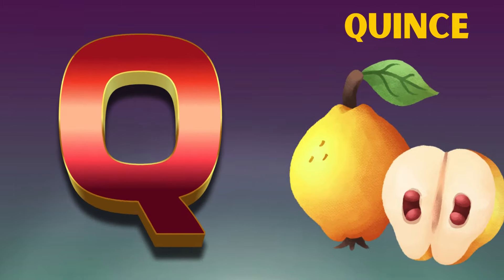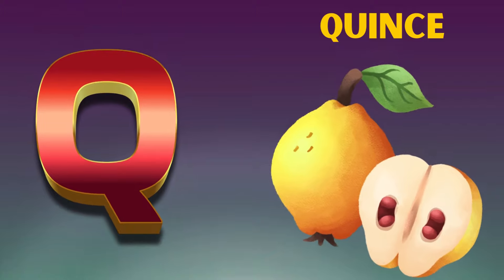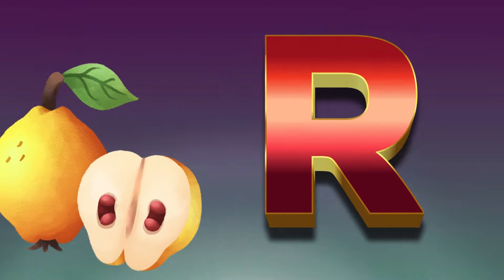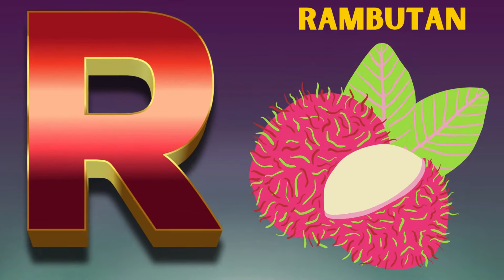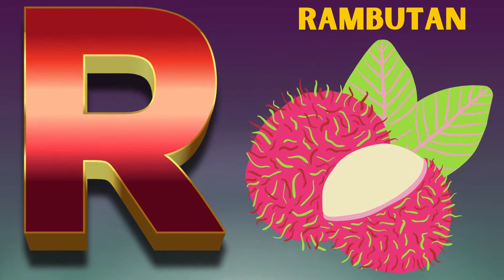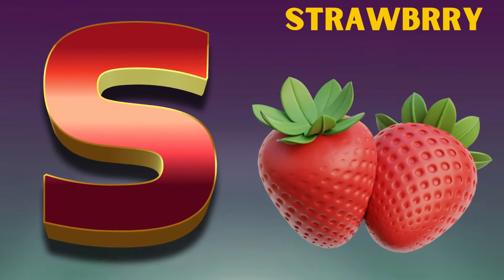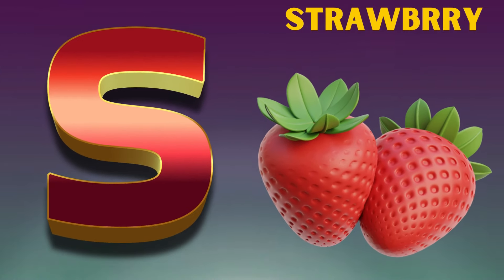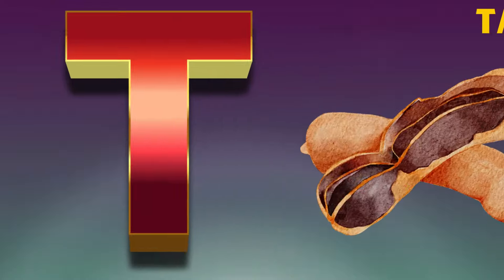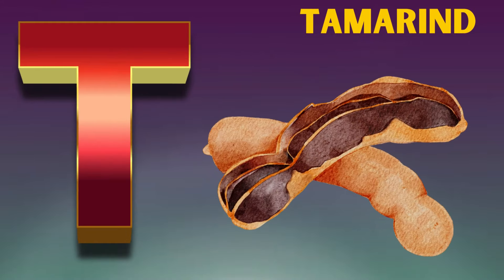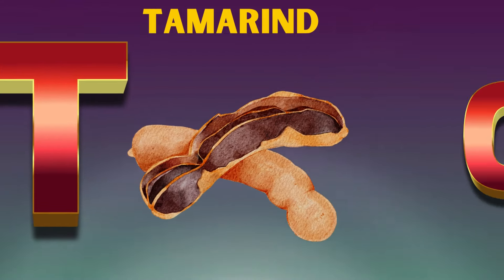Q is for quince, qu-qu-quince. R is for rambutan, r-r-r-rambutan. S is for strawberry, s-s-s-strawberry. T is for tamarind, t-t-t-tamarind.